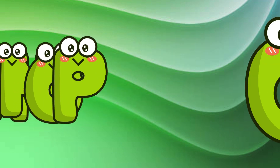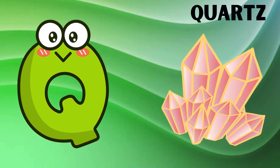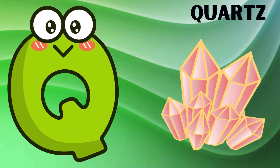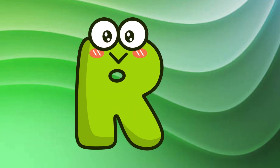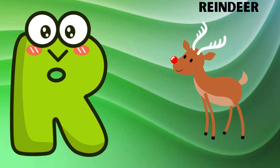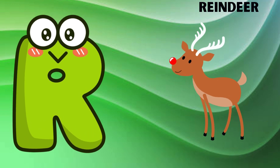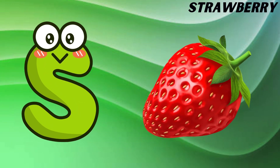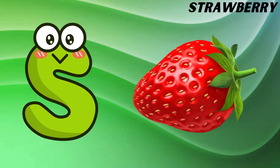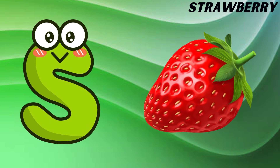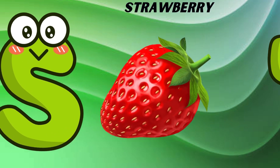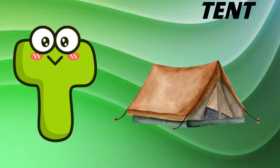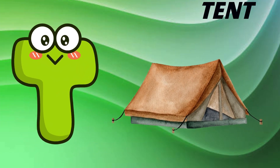Q is for quartz, q-q-quartz. R is for reindeer, r-r-reindeer. S is for strawberry, s-s-strawberry. T is for tent, t-t-tent.